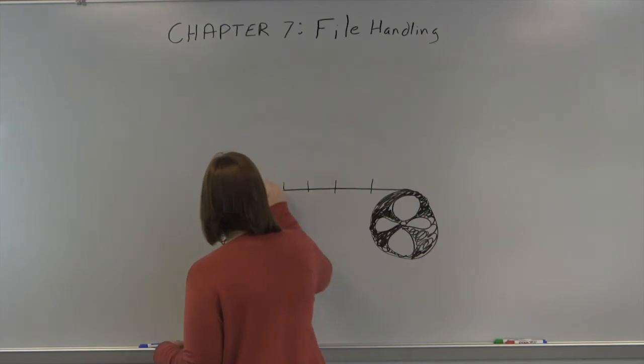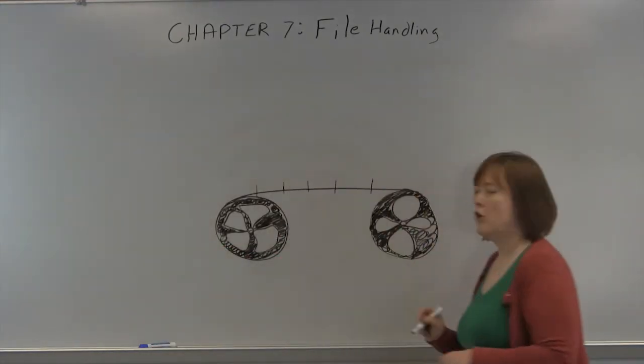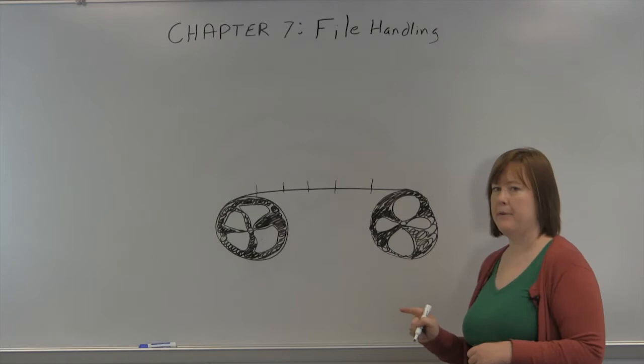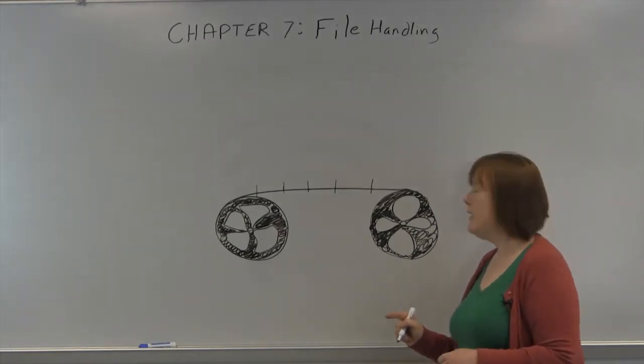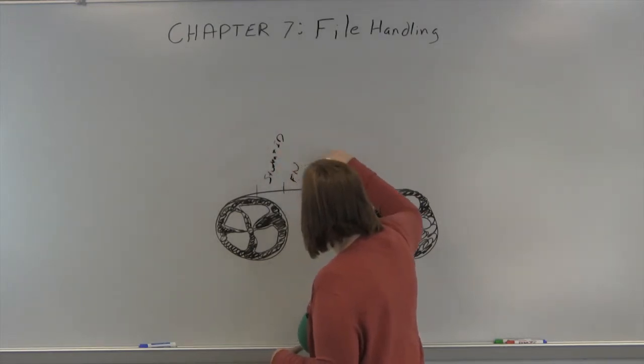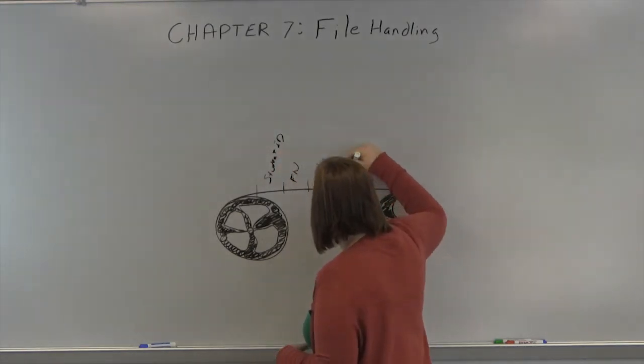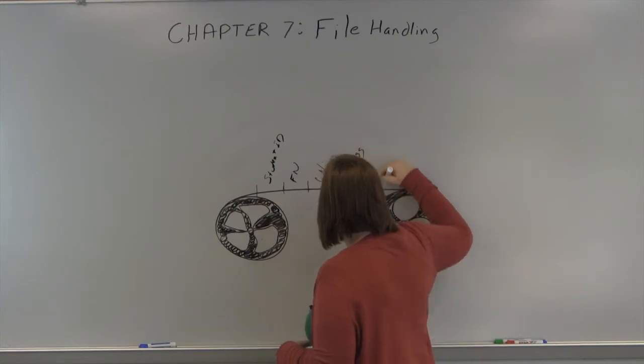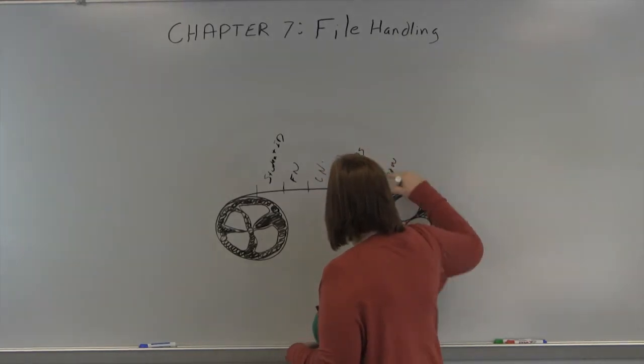So let's say that these are chunks of space on our reel-to-reel tape. And we have a record that would be student ID, first name, last name, address, and phone. And then it would start again.